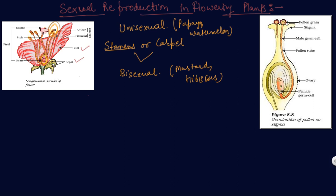The swollen bottom part is the ovary. The middle elongated part is the style and here is the stigma. These all together form the carpel.